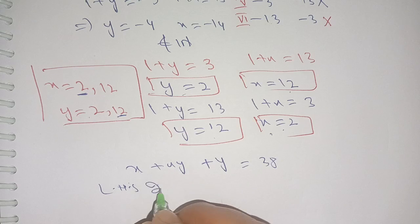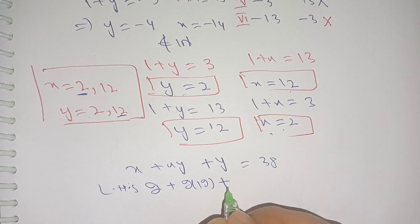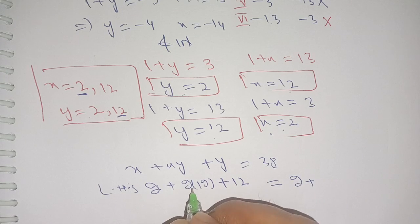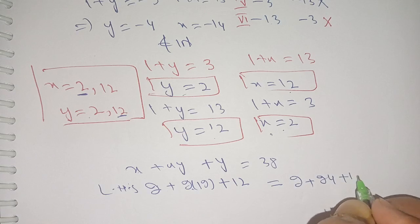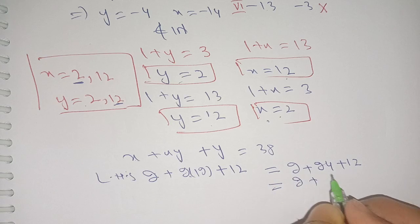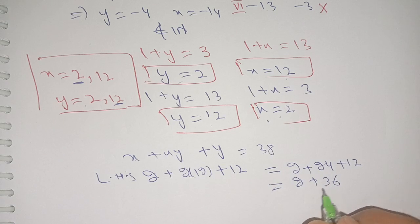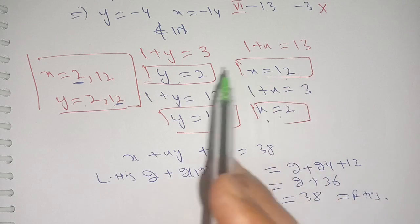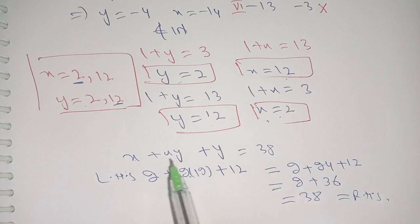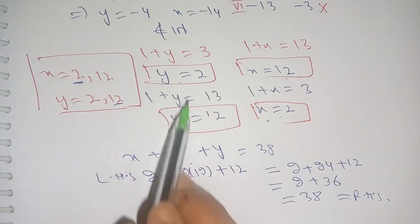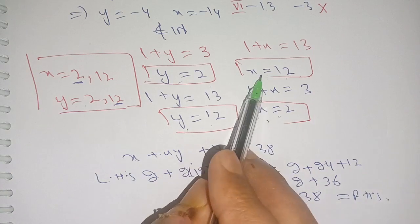We get 2 plus (2 times 12) plus 12, which equals 2 plus 24 plus 12, which equals 38. This equals our right-hand side. When x is equal to 12 and y is equal to 2, this also satisfies the equation. Thus when x equals 2, y equals 12, and when x equals 12, y equals 2.